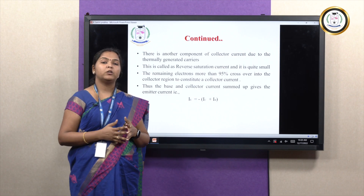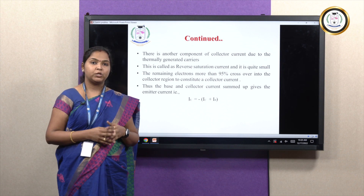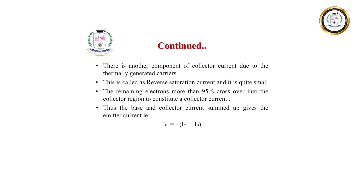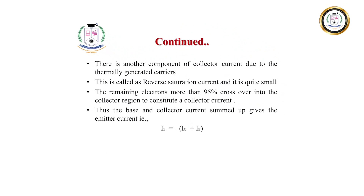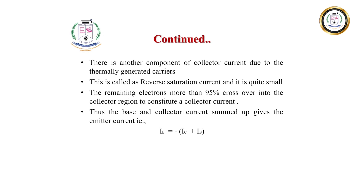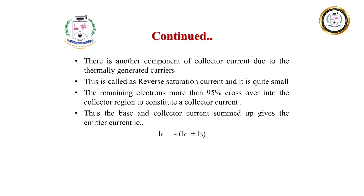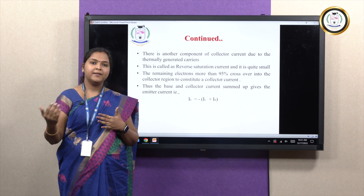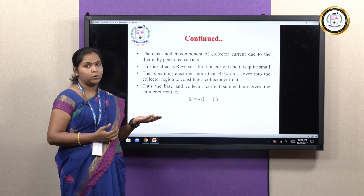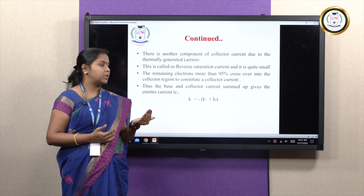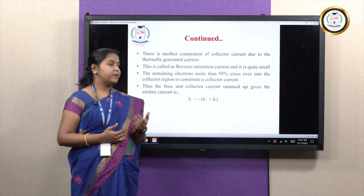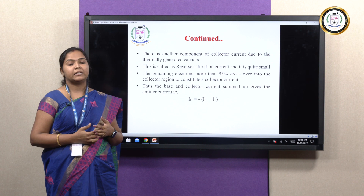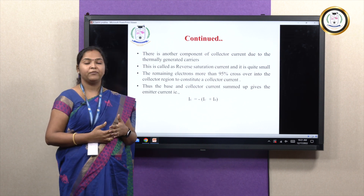To calculate the total transistor current generated in this NPN transistor: emitter current is equal to collector current plus base current. This means how much charge carrier has been emitted by the emitter region, each and every amount has been completely collected by the collector region. Mathematically: IE = IC + IB. The negative sign indicates that the flow of current is due to the help of electrons.